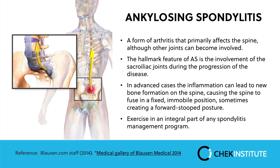Next is ankylosing spondylitis, a form of arthritis that primarily affects the spine, although other joints can become involved. The hallmark feature is involvement of the sacroiliac joints during the progression of the disease. In advanced cases, inflammation can lead to new bone formation on the spine, causing it to fuse in a fixed, immobile position — sometimes resulting in a forward stooped posture. Exercise is a real integral part of any spondylitis management program. It's also believed that the bacteria Klebsiella plays a role in the cause of ankylosing spondylitis in some cases.